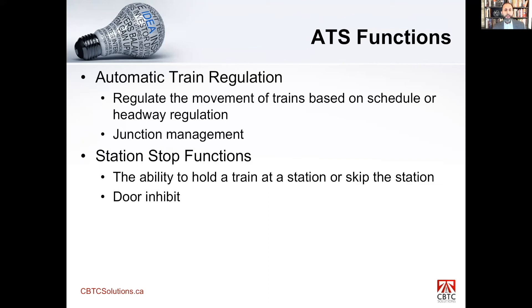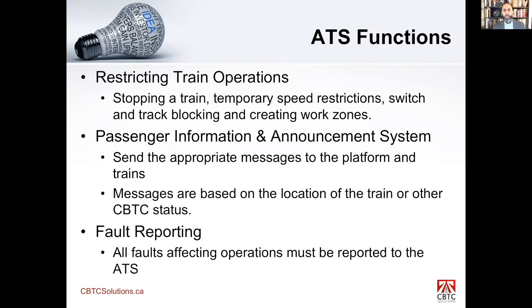Station stop functions — the operator has the ability to stop trains, start trains, hold trains at a station, skip stations, etc. Restricting train operations means you may want to put down a temporary speed restriction, switch blocking, track blocking, or create work zones — all done by the ATS as the central operator. They have control of the system and indicate the rules, non-vitally, for trains operating on the track.